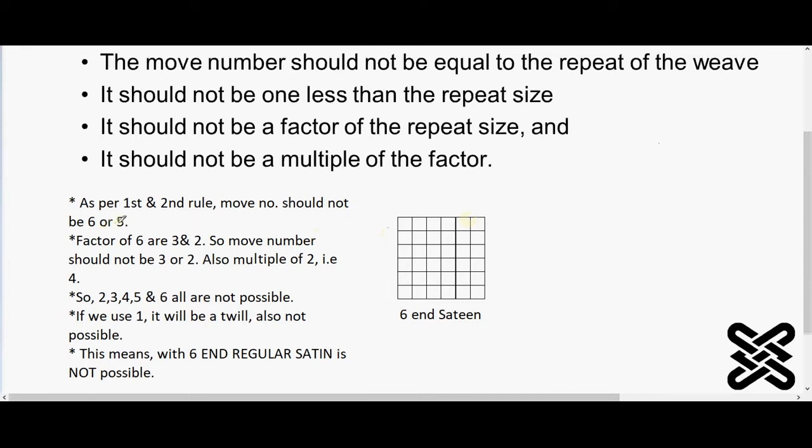Okay, clear. The factors of 6 are 3 and 2. So that means six can be divided by three, six can be divided by two, so move number should not be three or two.